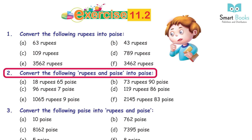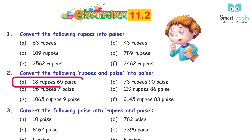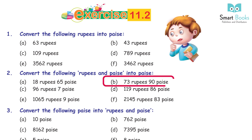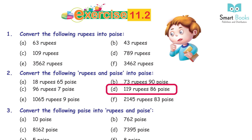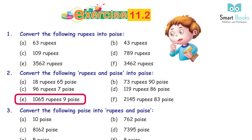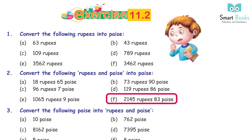Question 2: convert the following rupees and paise into paise. a. 18 rupees 65 paise = 1865 paise. b. 73 rupees 90 paise = 7390 paise. c. 96 rupees 7 paise = 9607 paise. d. 111 rupees 86 paise = 11,186 paise. e. 1065 rupees 9 paise. f. 2145 rupees 83 paise = 2,14,583 paise.